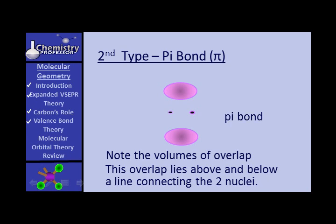The sigma bond lies between the two nuclei. The pi bond is kind of between them, but it lies above and below.